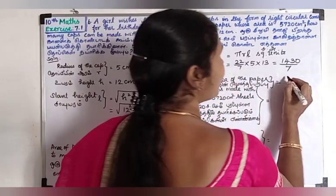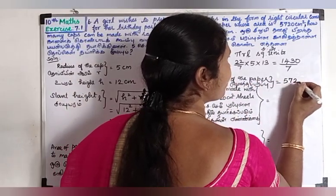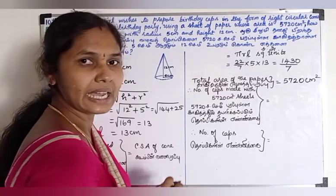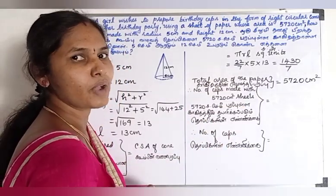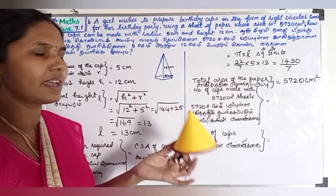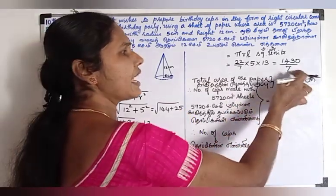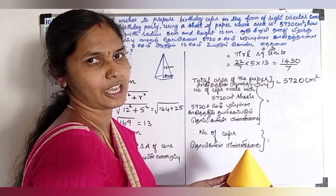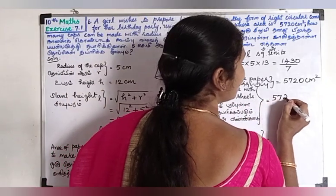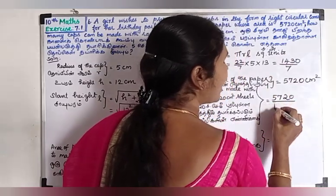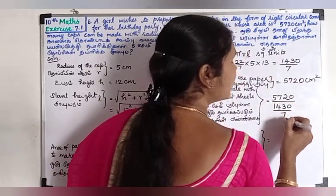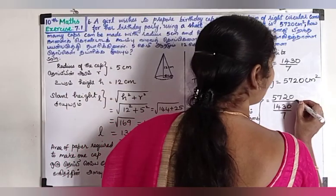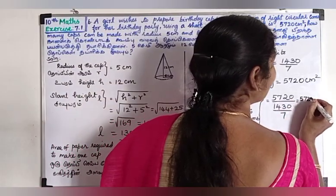Our total paper is about 5720 cm². That's the total area of the paper. So the number of caps equals total area divided by curved surface area of one cap. The numerator is 5720 and the denominator is the curved surface area of one cone cap, which is πrl.